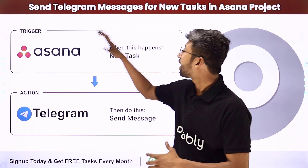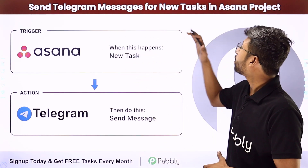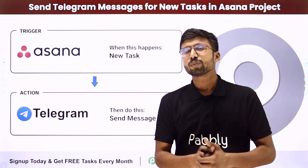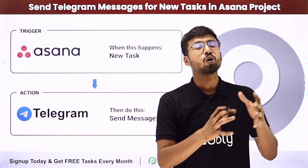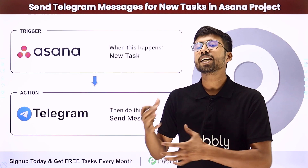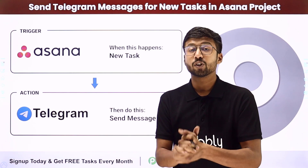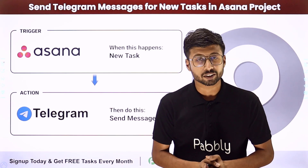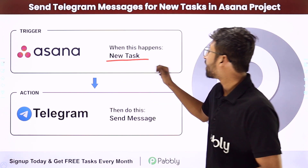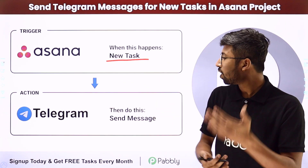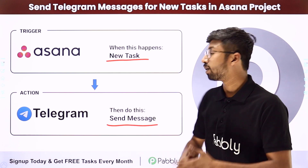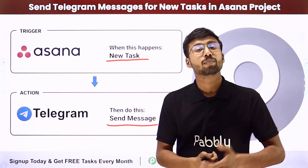In this video, we are going to learn how to send Telegram messages for a new task in an Asana project. Suppose you are using Asana to manage all of your projects and tasks with your team members, and you use Telegram to communicate with your team on a group or channel. Whenever a new task is created in Asana, automatically the details of that newly created task should be shared on your Telegram channel as a message.